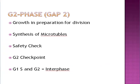G2 phase, or Gap 2, is pretty much summarized as preparations for division. The microtubules that the chromosomes are going to walk down during anaphase are being produced here. There's a major safety checkpoint — the G2 checkpoint — where you double-check DNA replication to make sure everything went okay. You're preparing the cell for division, getting equal numbers of cellular parts on both sides.